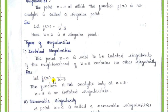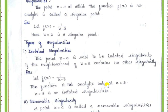For example, f of z equal to 1 by z minus 3. When replacing z equal to 3 we get infinite value, so z equal to 3 is an isolated singularity. Other than z equal to 3, whatever value you substitute for z you will get some finite value. So z equal to 3 is the only singular point for this function.